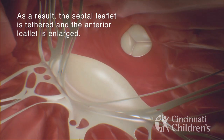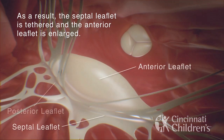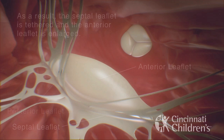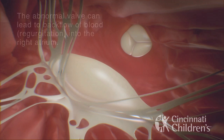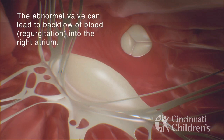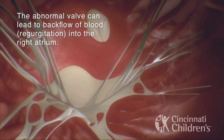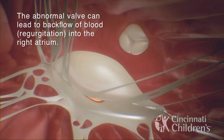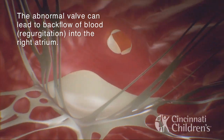As a result, the septal leaflet is tethered and the anterior leaflet is enlarged. The abnormal valve can lead to backflow of blood, referred to as regurgitation, into the right atrium.